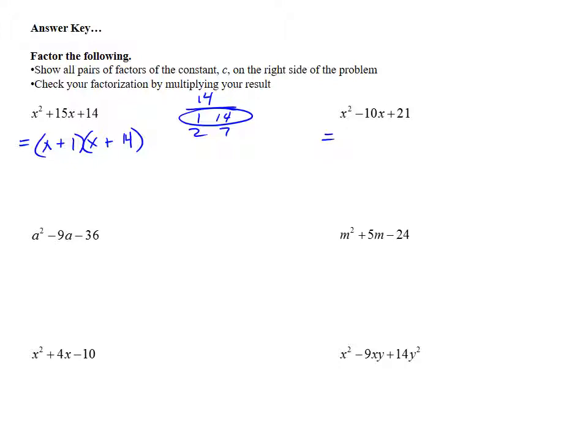Next example, x squared minus 10x plus 21. Set up your parentheses. Split up your x squared to x and x. Factor your 21: 1 and 21, 3 and 7. There's no other factors. If I want to get a negative 10, I need two negatives and we want them to add up to a negative 10, so I'm going to use negative 3 and negative 7. So there's our factorization. I'll check in a few minutes.